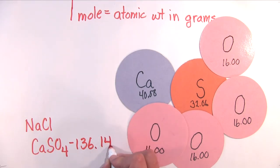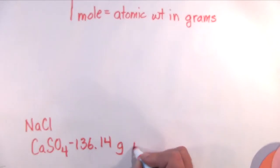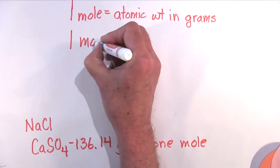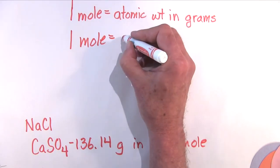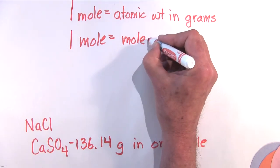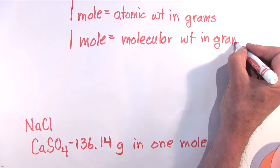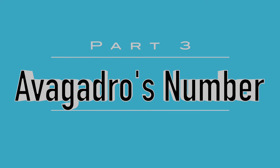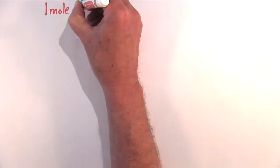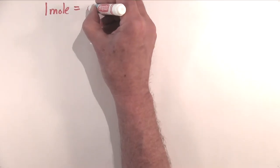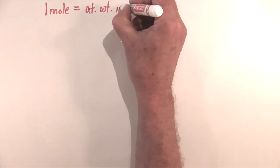So let's extend our definition of a mole a little bit. A mole also equals the molecular weight in grams. So the story so far now is that a mole is a lump, and we said that it was equal to the atomic weight in grams.